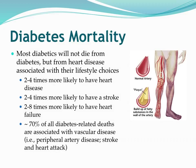Our diabetics are two to four times more likely to have heart disease — such as peripheral artery disease, strokes, and myocardial infarcts. They're two to four times more likely to have a stroke and two to eight times more likely to have heart failure. Approximately 70% of all diabetes-related deaths are associated with some form of vascular disease — PAD, stroke, heart attack, and so on.